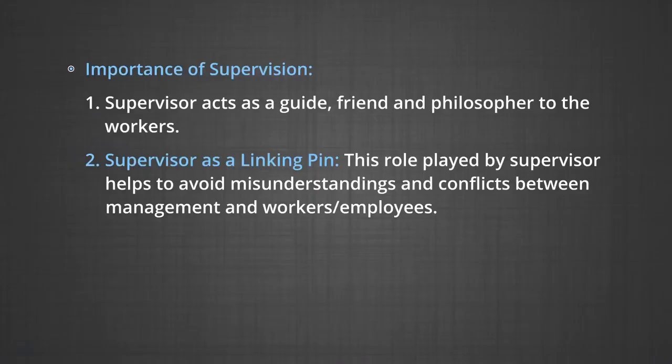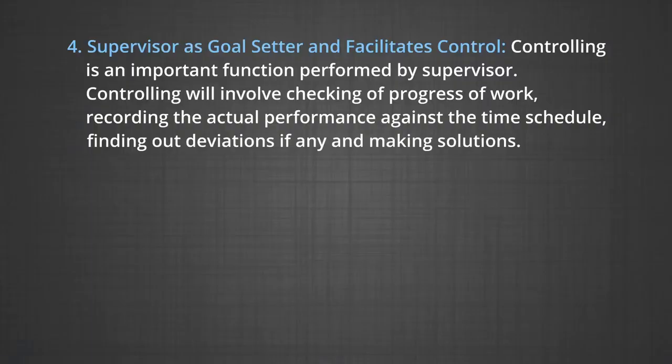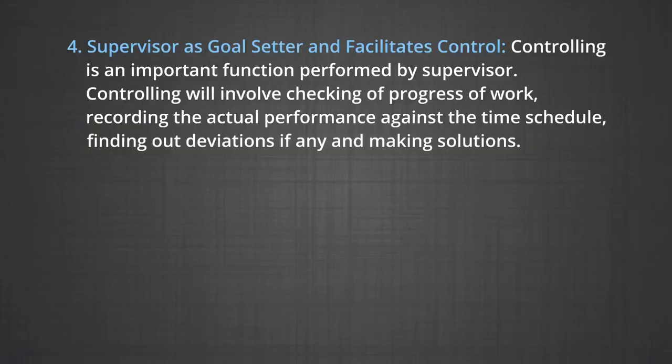Supervisor has a linking pin role. Supervisor acts as a link between workers and management. He conveys management ideas to the workers on one hand and workers' problems to the management on the other. This role played by supervisor helps to avoid misunderstandings and conflicts between management and workers or employees. Supervisor maintains group unity and harmony. Supervisor plays a key role in maintaining group unity among workers placed under his control. He sorts out internal differences and maintains harmony among workers by solving their disputes. Supervisor as goal setter and facilitates control: supervisors are responsible for setting goals for themselves and their subordinates. Controlling will involve checking of progress of work, recording the actual performance against the time schedule, finding out the deviations if any, and making solutions.